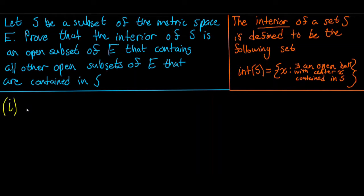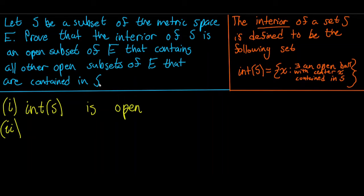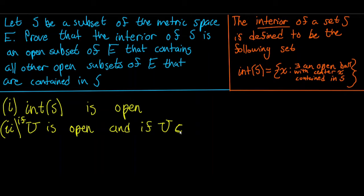There are two things we want to prove here. The first thing is we want to prove that the interior of S is open. The second thing is that all other open sets of E that are contained in S are also contained in the interior of S. In other words, if U is open and U is contained in S, then U is contained in the interior of S.